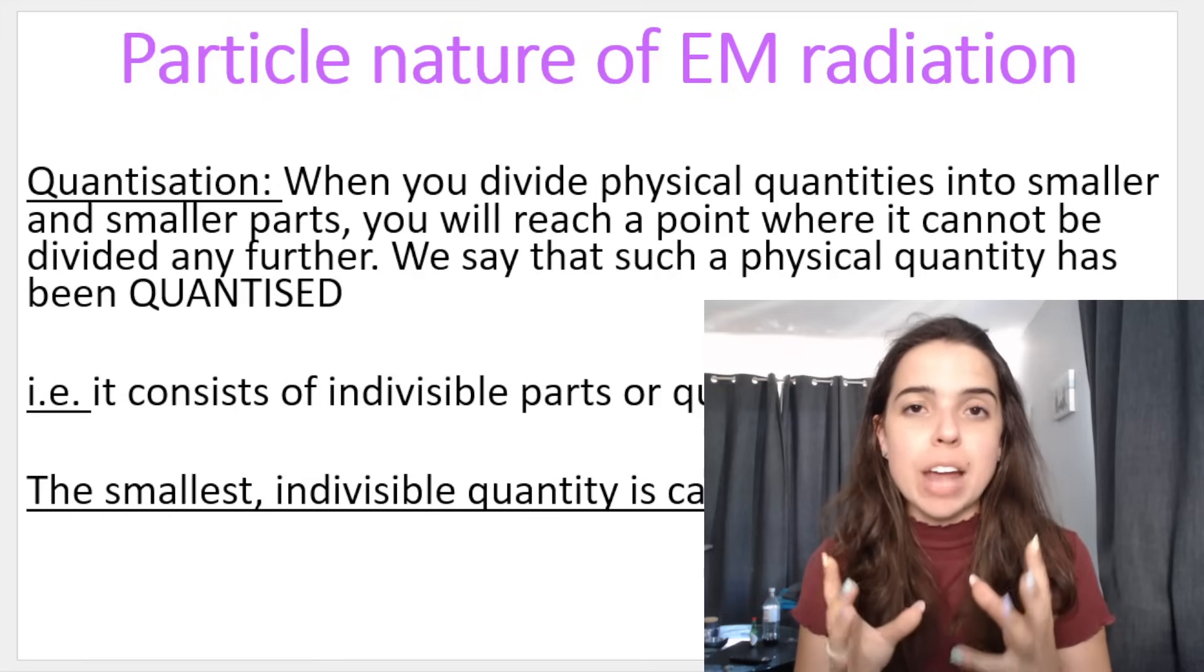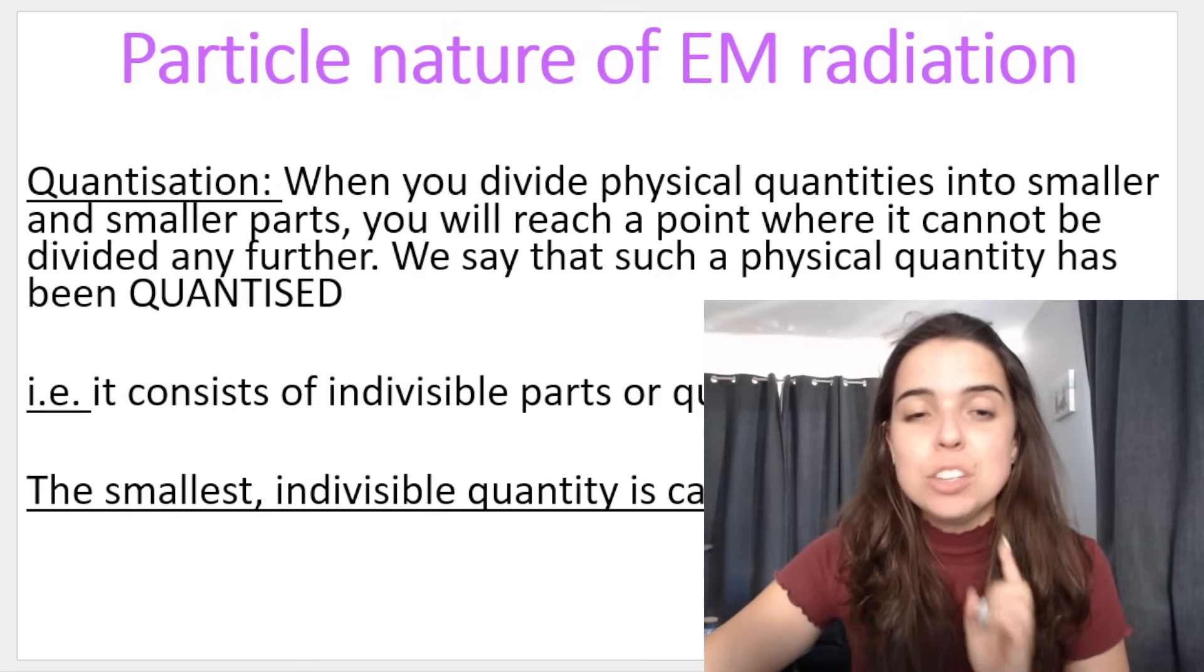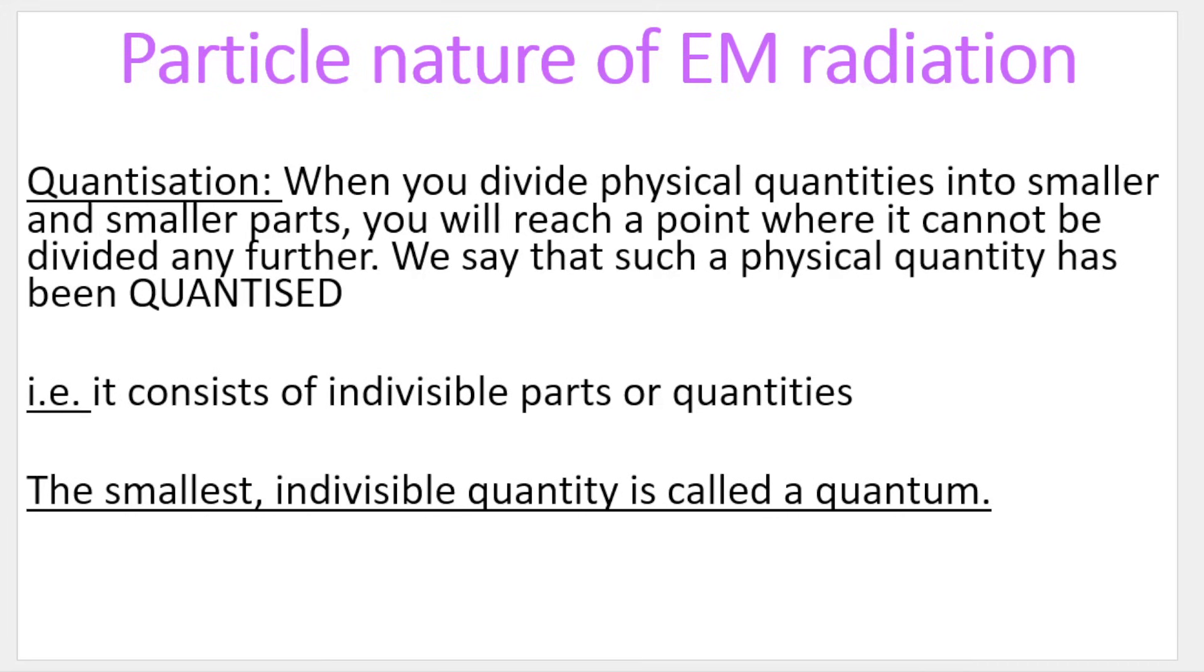We went over the wave nature of light in the previous video. Now, we're gonna focus on the particle nature. So, some terms that you have to know. Quantization is when I divide something into smaller parts, you will eventually reach a part where it cannot be divided anymore. So, think about if you have to tear up a piece of paper, and you have to tear it up, and tear it up, and tear those pieces into more pieces. Eventually, you are going to reach a point where you can't tear that paper any smaller.